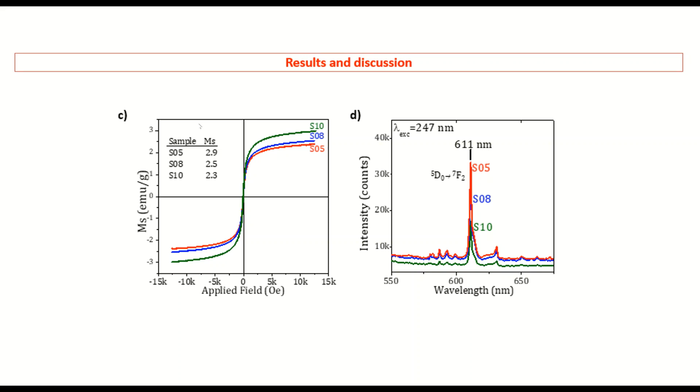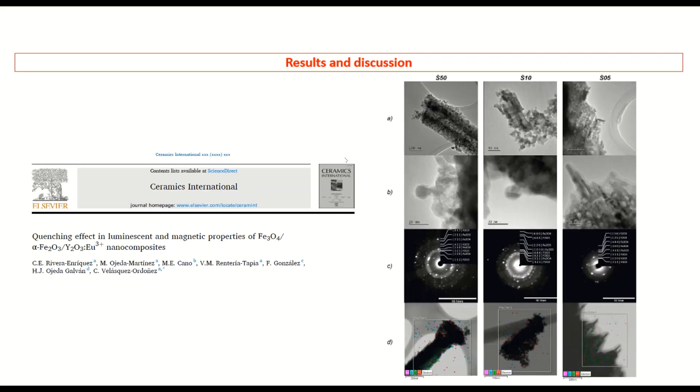In a previous work, we have reported that changing the concentration of the components modifies the morphology of the particles. So, by lowering the activator concentration is a good method to achieve the highest magnetic saturation and a good luminescent intensity.